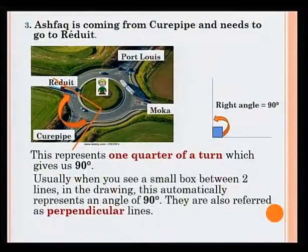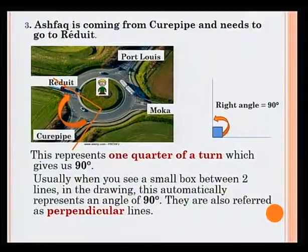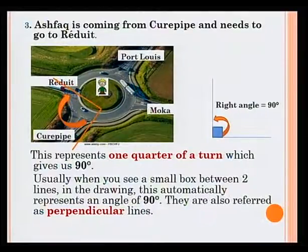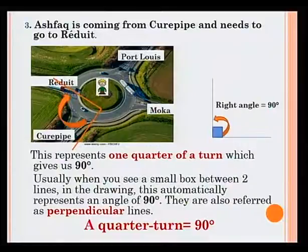Usually, when you see a small box between two lines — for example, like in the drawing here — this automatically represents an angle of 90 degrees. They are also referred to as perpendicular lines. A quarter of a turn is equal to 90 degrees, also known as a right angle.